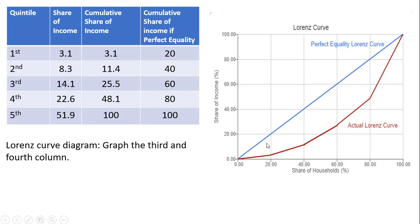At the bottom 60%, I'm trying to find 25.5% share of income, so that's somewhere right about here. The bottom 80%, we're almost at 50%, so that's right about here, 48.1% share of income going to the bottom 80%.